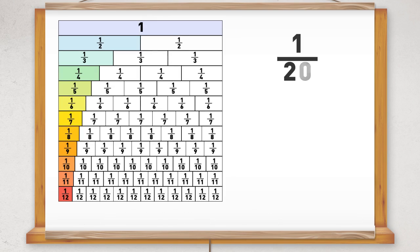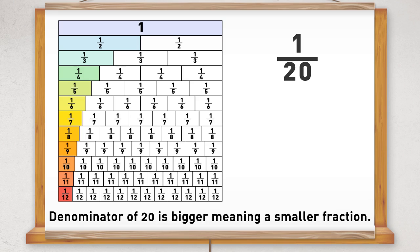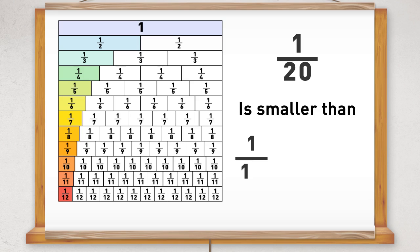for example one-twentieth, because the denominator of twenty is bigger than any other denominators on this fraction wall, then one-twentieth is smaller than any of these unit fractions. We can also say that one-twentieth is smaller than one-nineteenth or one-eighteenth or one-seventeenth, etc.